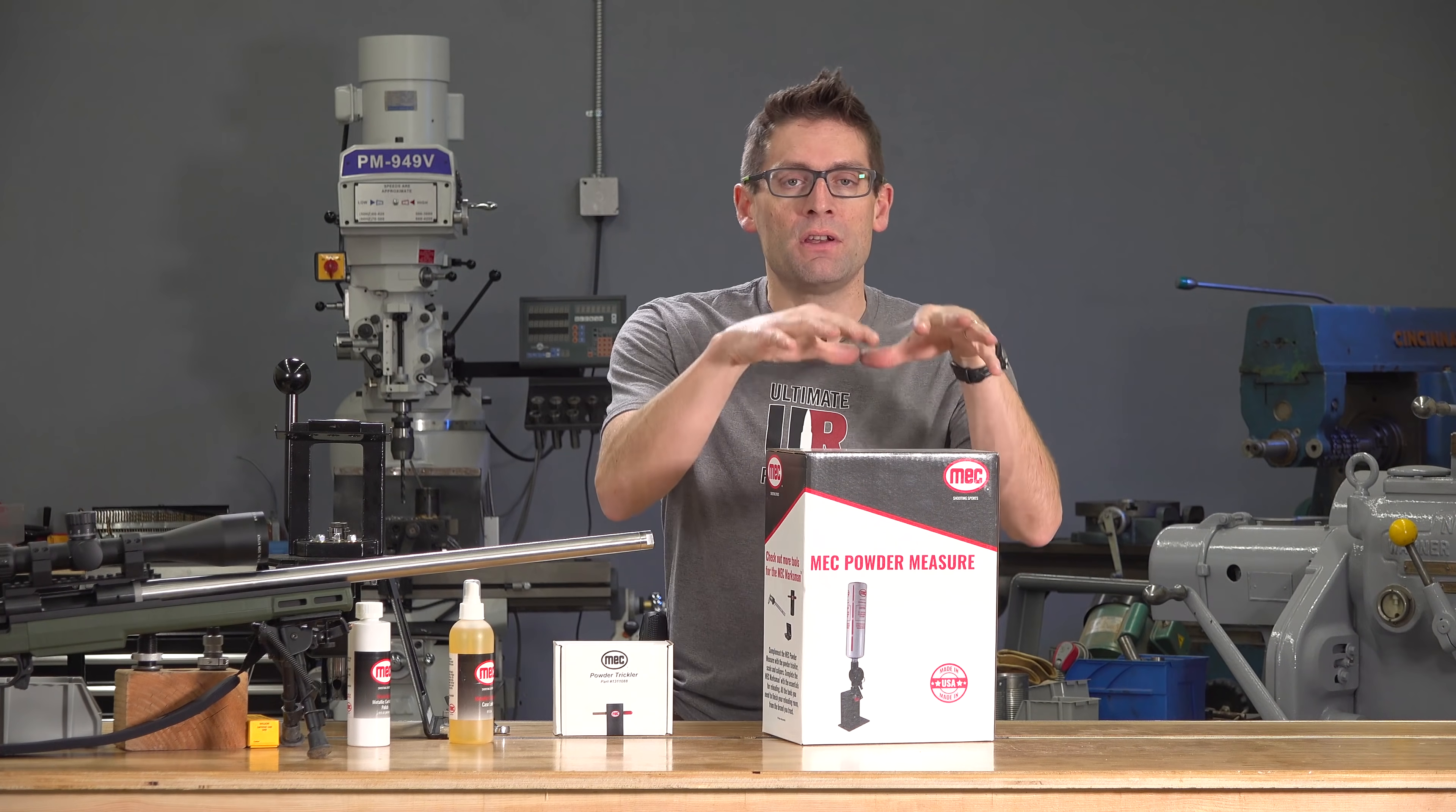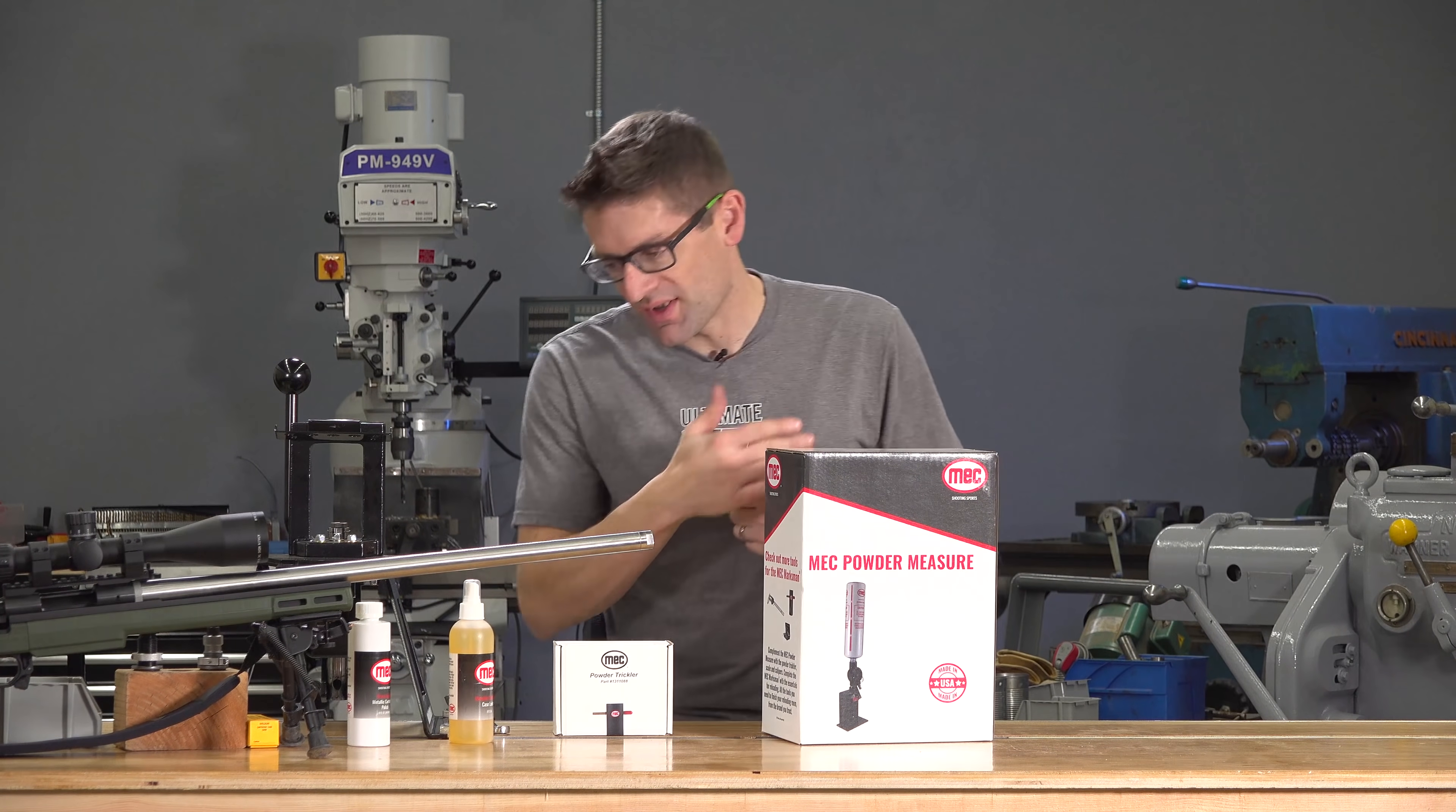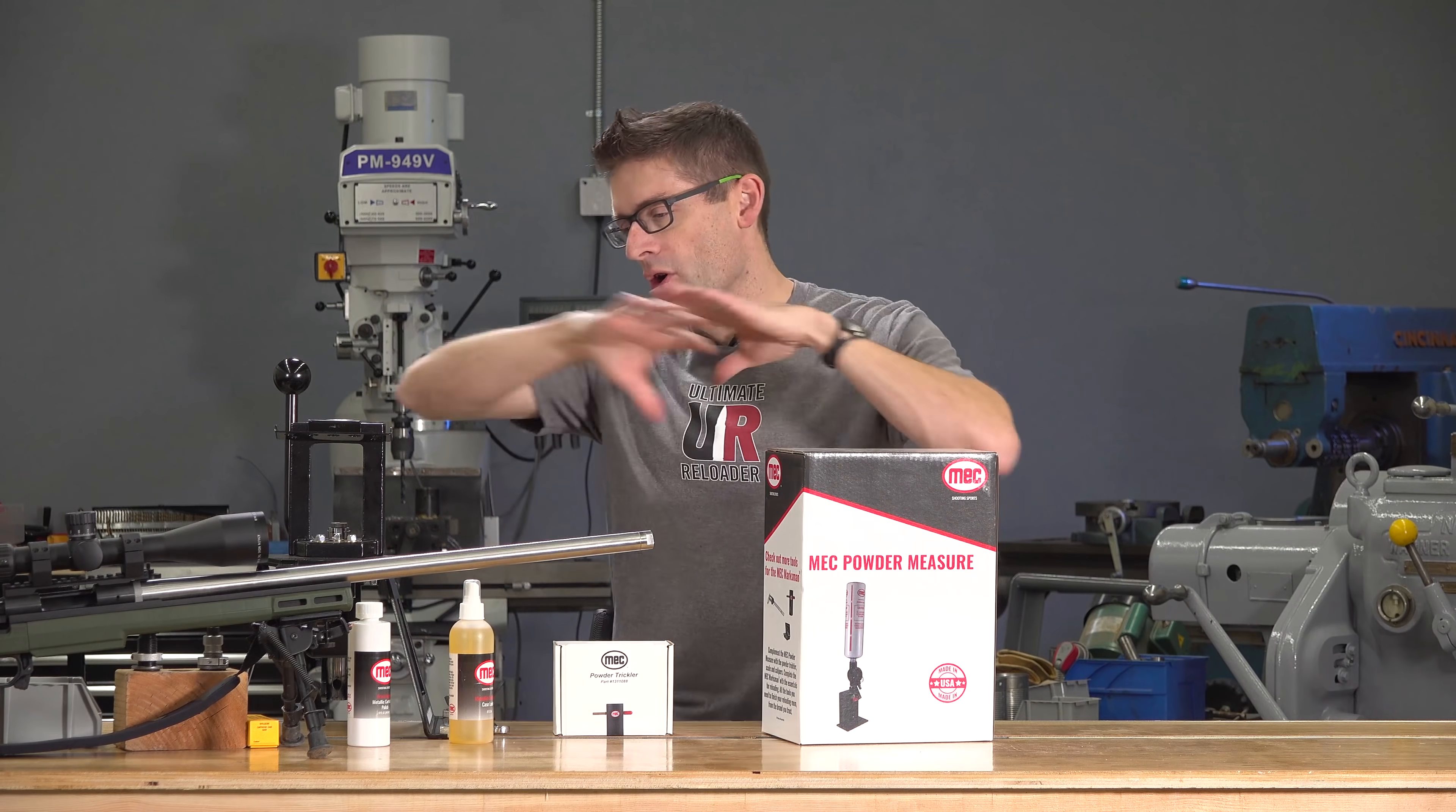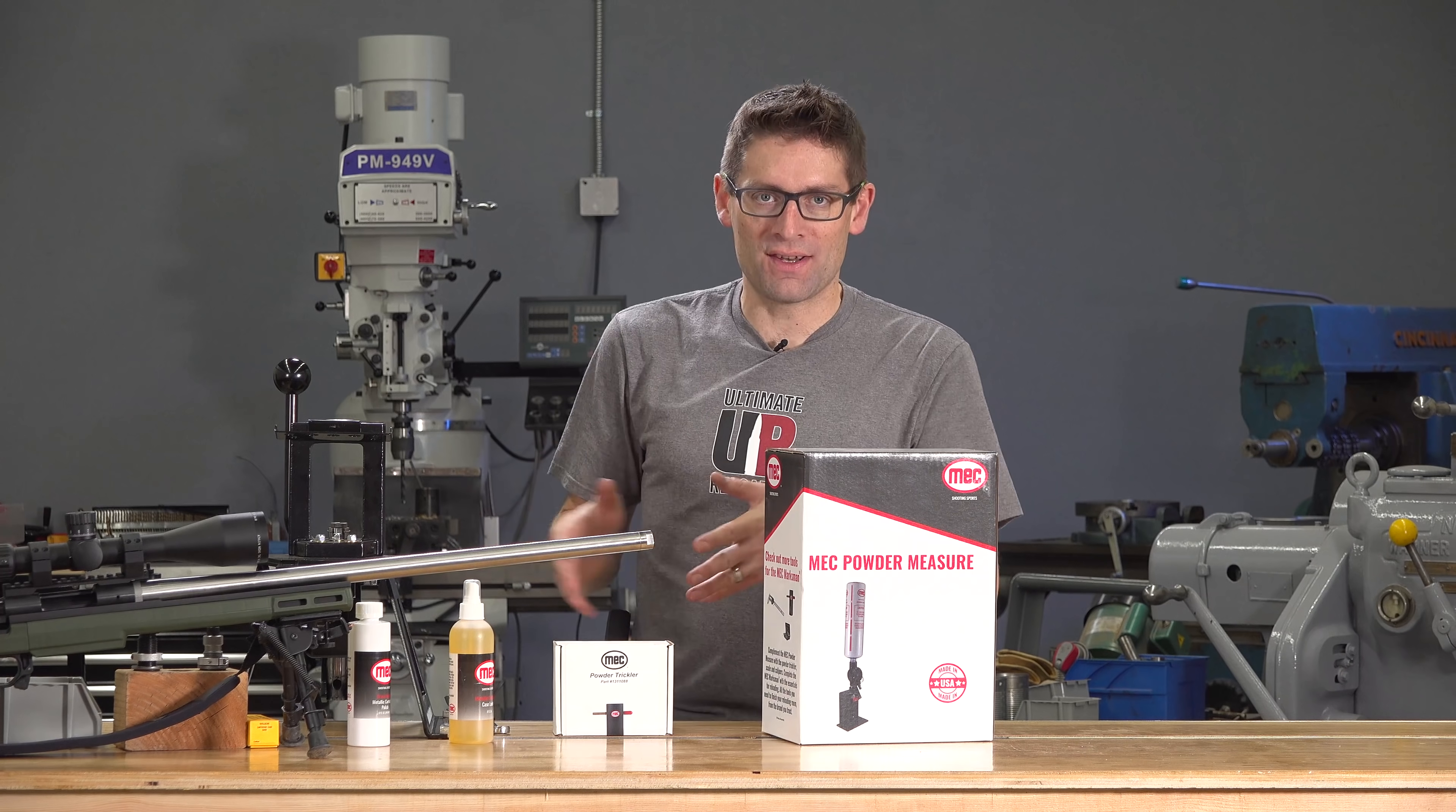In this video, we're going to do a quick unboxing and we're going to set up and use their bench mounted powder measure. And then in the next video, we'll take a look at some of these other supplies, brass cleaner, brass lube, powder trickler, and the press, and the powder measure all together to do a precision end-to-end 224 Valkyrie loading scenario.